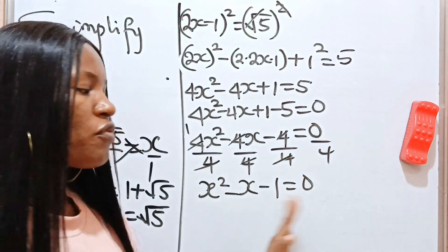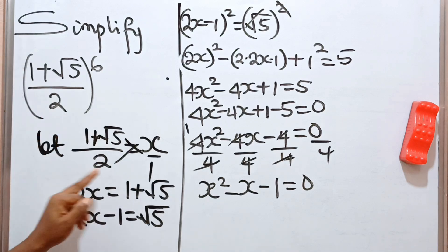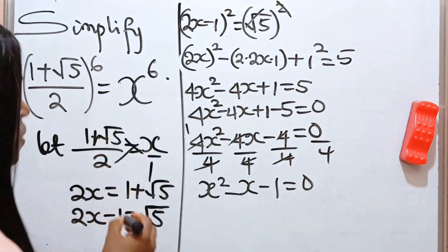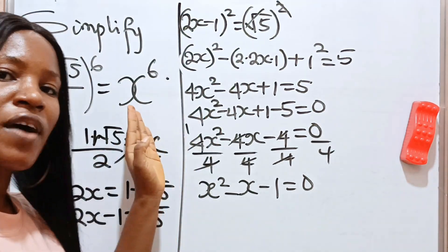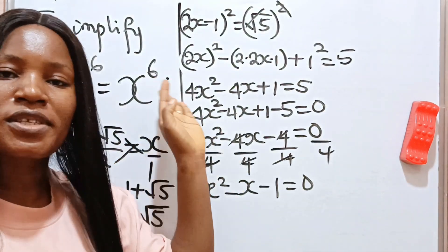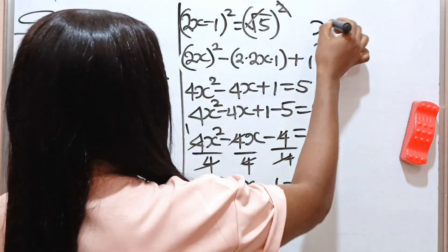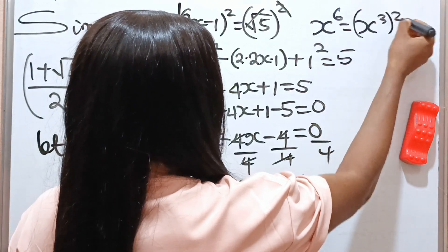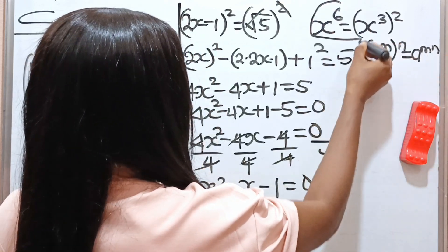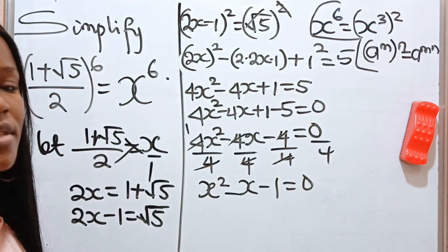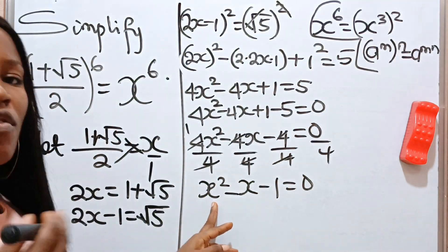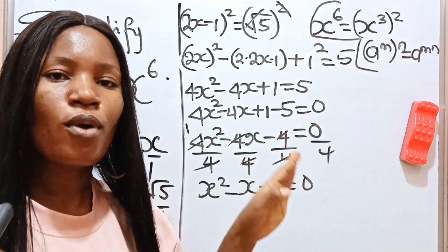Now let me explain why we are finding all this. Remember that x to the power of 6 — since we called the original expression x, this is the same as x to the power of 6. Using the law of indices, x⁶ = (x³)², because (x^m)^n = x^(m×n), and 3 times 2 equals 6. So the plan is: first get x², then x³, and then square it to get x⁶.